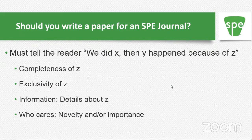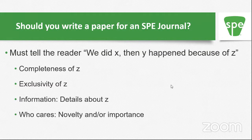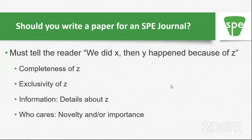So why should you write a paper for an SPE journal? In a simple sense, any paper has to say: we did X, then Y happened because of Z. We did something, we saw this result, and this is why the change happened. X and Y are pretty straightforward — you might change a structure, filler, molecular weight, or branching, and Y could be rheological, mechanical, electrical, whatever. The question is really about Z — why did that happen?